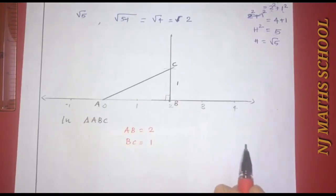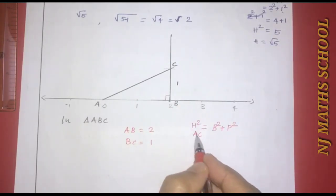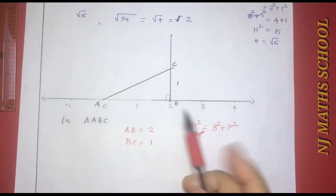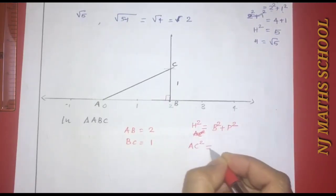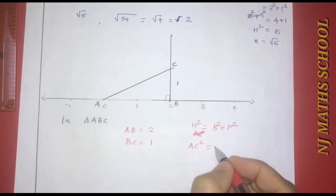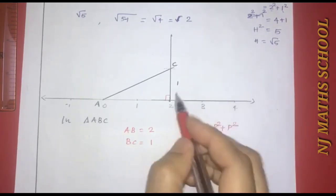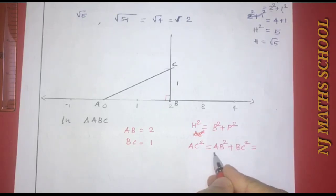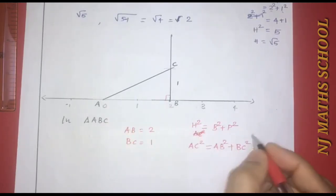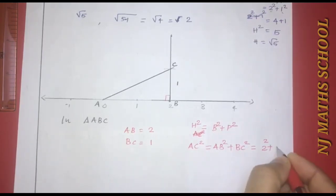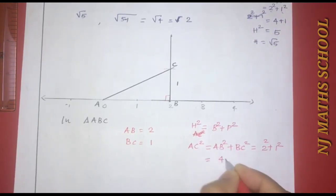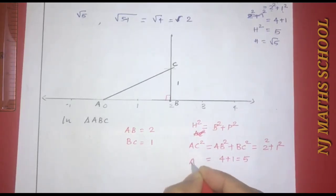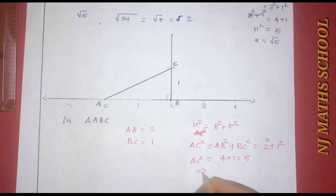Triangle ABC is a right-angle triangle. Using the Pythagorean theorem: h² = b² + p². Here h is the hypotenuse AC, b is the base AB, and p is the perpendicular BC. So AC² = AB² + BC² = 2² + 1² = 4 + 1 = 5. Therefore AC = √5.